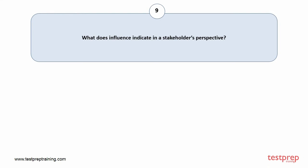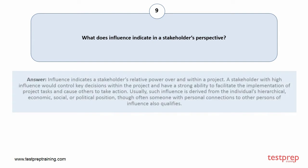Question number 9: What does influence indicate in a stakeholder's perspective? Your answer is: Influence indicates a stakeholder's relative power over and within a project. A stakeholder with high influence would control key decisions within the project and have a strong ability to facilitate the implementation of project tasks and cause others to take action. Usually, such influence is derived from the individual's hierarchical, economic, social, or political position, though often someone with personal connections to other persons of influence also qualifies.